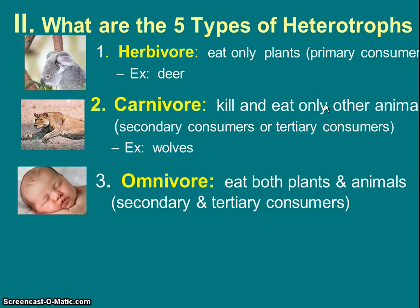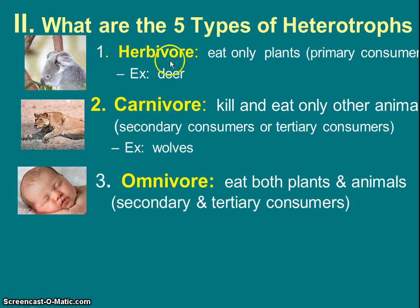Then comes omnivore — that's us. We could be secondary or tertiary consumers. Omnivore means both: they eat both plants and animals. Scientists can sometimes determine this by observing animals in the wild, or by looking at skulls. Sharp canines are for tearing meat, while flat molars are more for herbivores. We have both canines and flat molars, so we are omnivores.